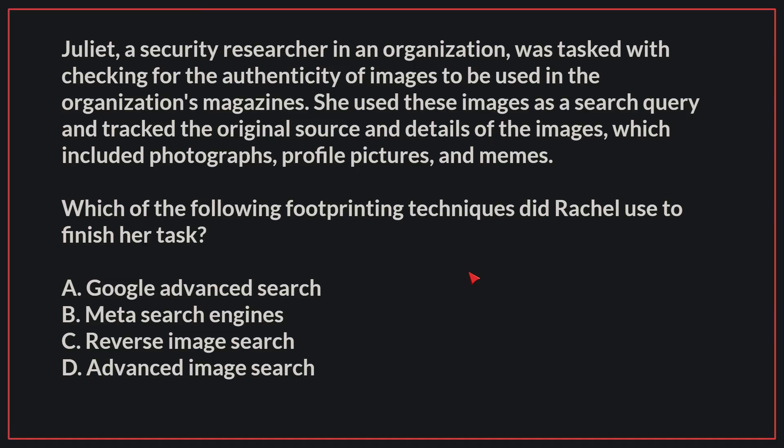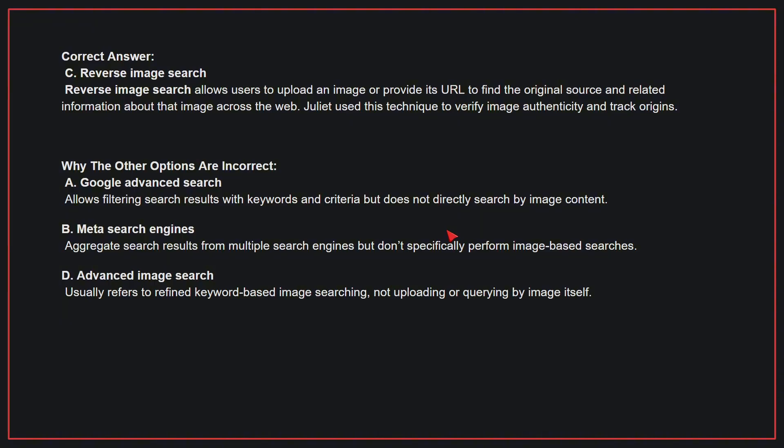The correct answer is C, reverse image search. Reverse image search allows users to upload an image or provide its URL to find the original source and related information about that image across the web. Juliet used this technique to verify image authenticity and track origins.